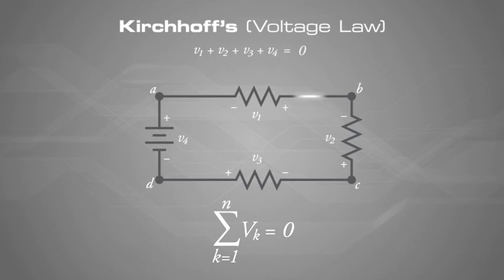The algebraic sum of the products of the resistances of the conductors and the currents in them in a closed loop is equal to the total EMF available in that loop.